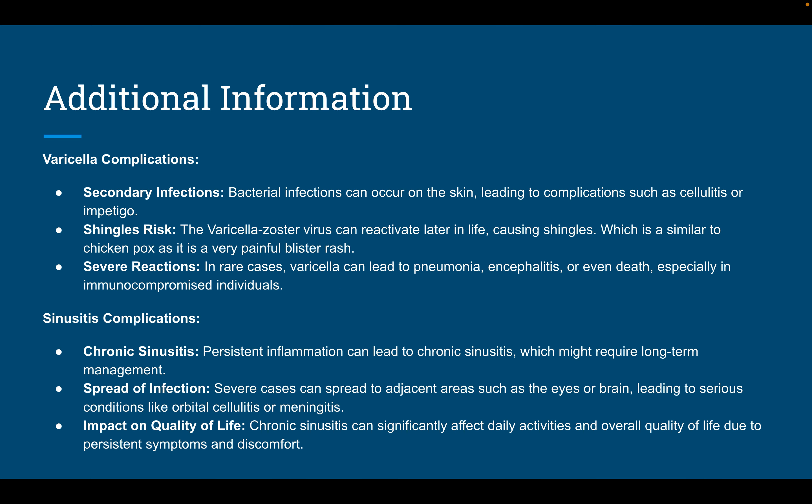Additional information on complications: with varicella, there can be secondary infections leading to conditions like cellulitis or impetigo. After having chickenpox, the varicella-zoster virus can reactivate later in life and cause shingles — a painful blister rash similar to chickenpox. In some cases, chickenpox can lead to pneumonia, encephalitis, or even death, especially in immunocompromised individuals.